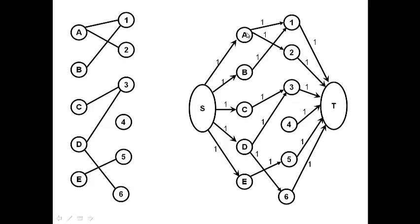All edges are of capacity one. This means if we try to attach more than one edge to a vertex in the maximum matching, it's not possible. We solve this as a flow problem — finding the maximum flow from source to sink. Since there's only one unit of capacity from source to each vertex, the inflow is at most one, so the outflow is at most one. You cannot use more than one edge from each vertex, satisfying the maximum matching condition.